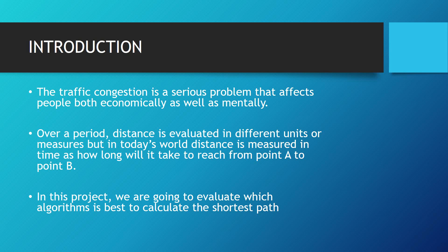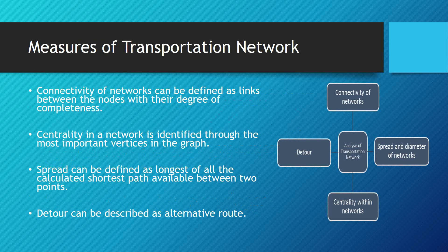In this project, I am going to evaluate different routing algorithms on basic routes. How we measure and analyze the transportation network — there are four ways. First is the connectivity of networks, defined as the link between nodes with their degree of completeness. Second is centrality, identified through the most important vertices in the graph. Third is spread in diameter — the longest calculated shortest path between two points. And the last is the detour: how many alternative routes and how much time they take.